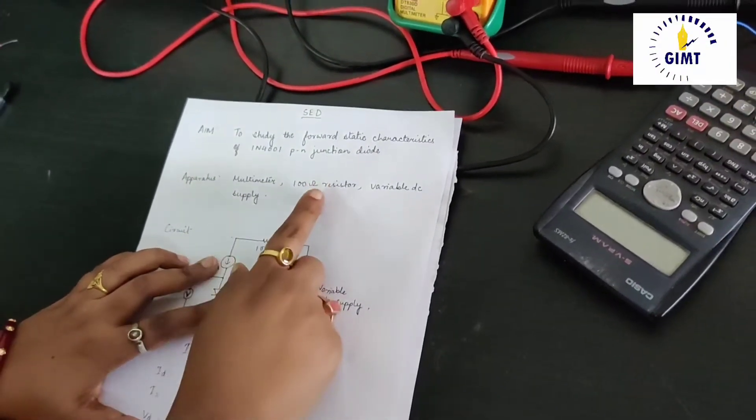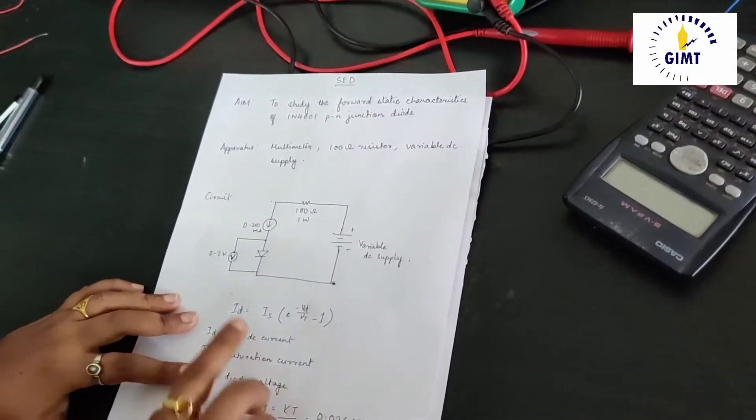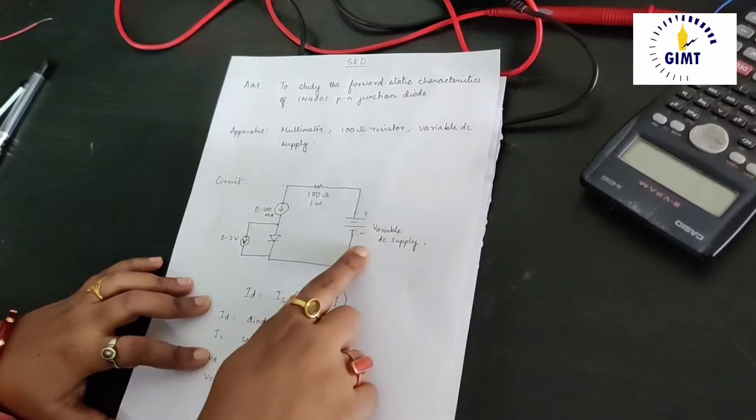The apparatus required is multimeter, 100 ohm resistor and variable DC supply. This is the circuit connection where we have connected the diode in forward bias condition.